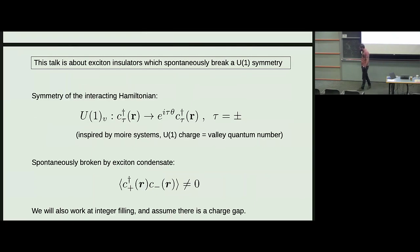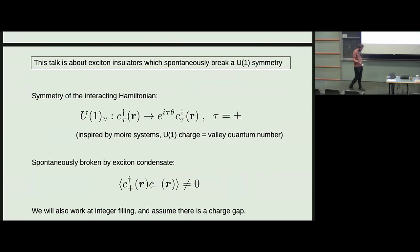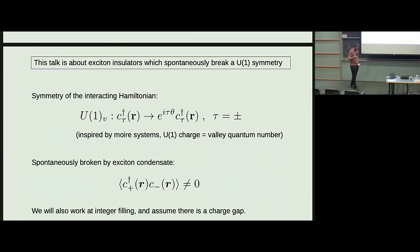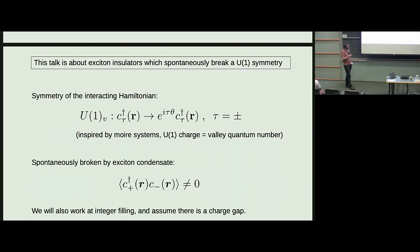Today I will be talking about exciton insulators—specifically, exciton insulators which spontaneously break a U(1) symmetry. In particular, I will be thinking about systems where the Hamiltonian has, on top of the usual charge U(1) symmetry, an additional U(1) symmetry, such that we can divide the electron into two different species: one with charge +1 and the other with charge -1 under this additional U(1)V symmetry.